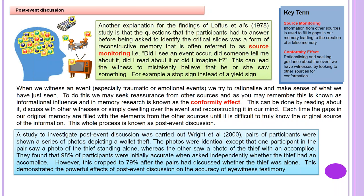Each time the gaps in our original memory are filled with elements from other sources, it becomes difficult to truly know the original source of information. This whole process is known as post-event discussion. A study to investigate post-event discussion was carried out by Wright et al. in 2000. Pairs of participants were shown a series of photos depicting a wallet theft. One participant in each pair saw a photo of the thief standing alone, whereas the other saw the thief with an accomplice. They found that 98% of participants were initially accurate when asked independently; however, this dropped to 79% after the pairs had discussed whether the thief was alone, demonstrating the powerful effects of post-event discussion on eyewitness accuracy.